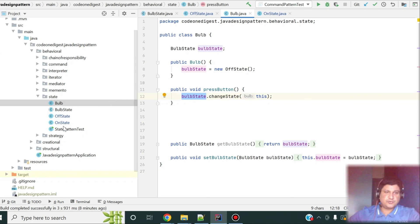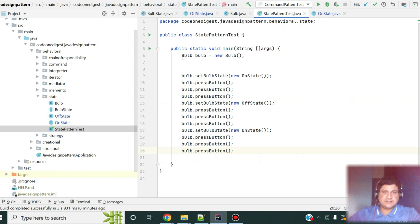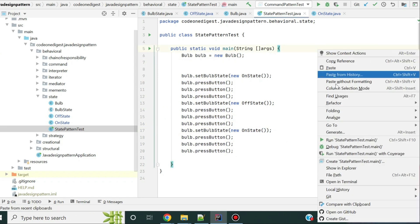Now, let me show you a test class what I have done. So, in this test class, I have defined a bulb object. This is my context. And, in this bulb object, I am setting the initial state is on state. That means, the bulb is now in on state. Then, I am pressing a button three times. Then, I am changing my state by passing an instance of off state. Then, I am pressing a button three times. And then, again, I am putting it on. Let's see what happens when we run this class.